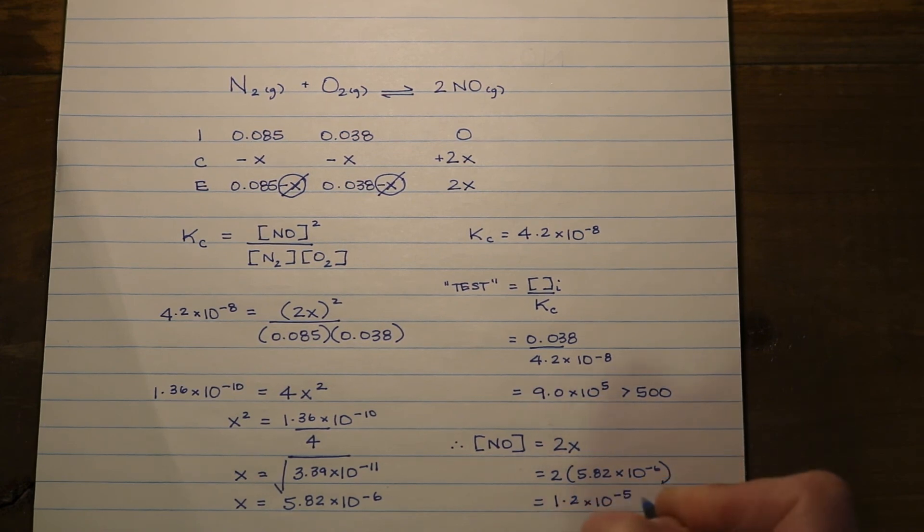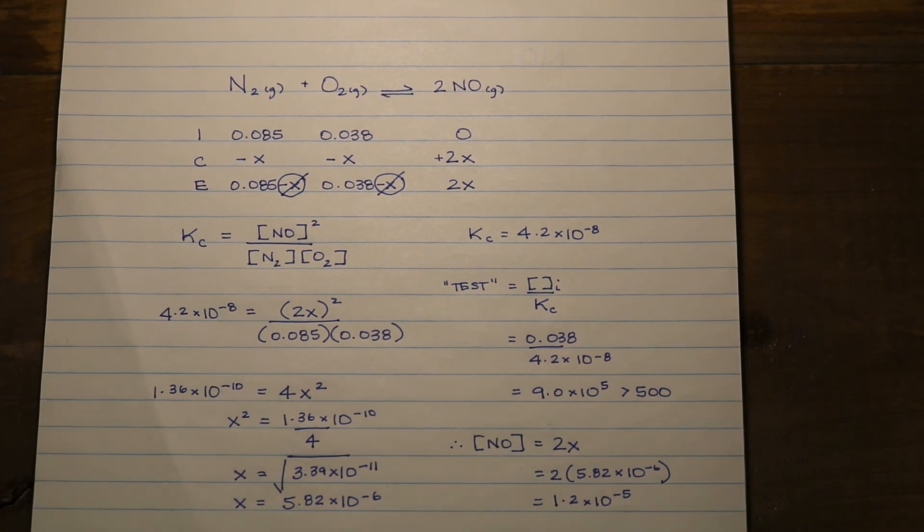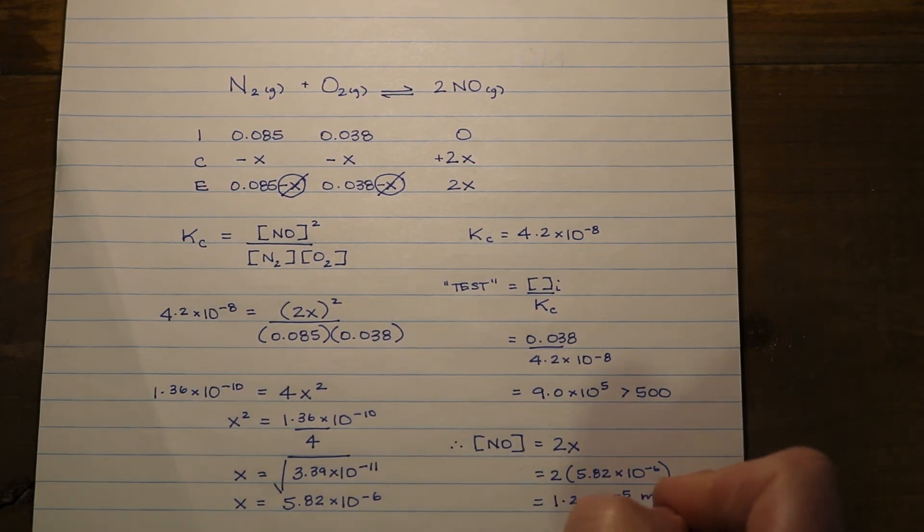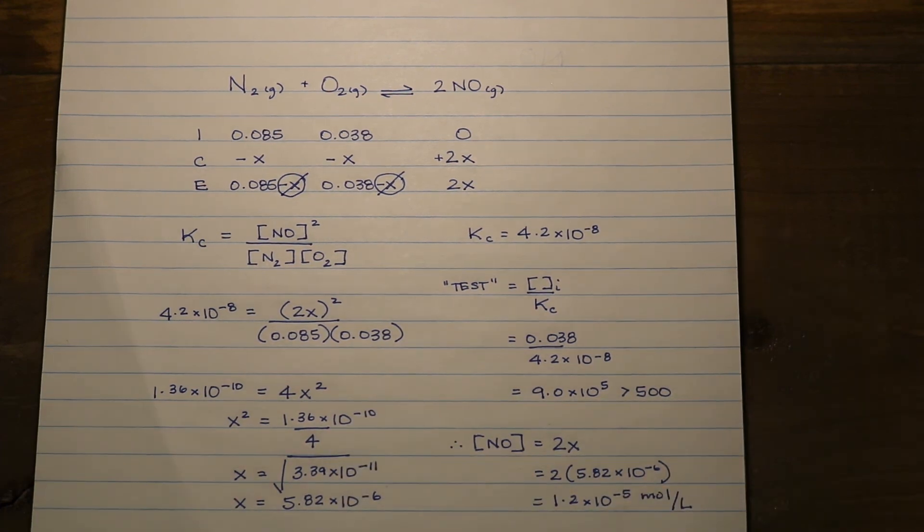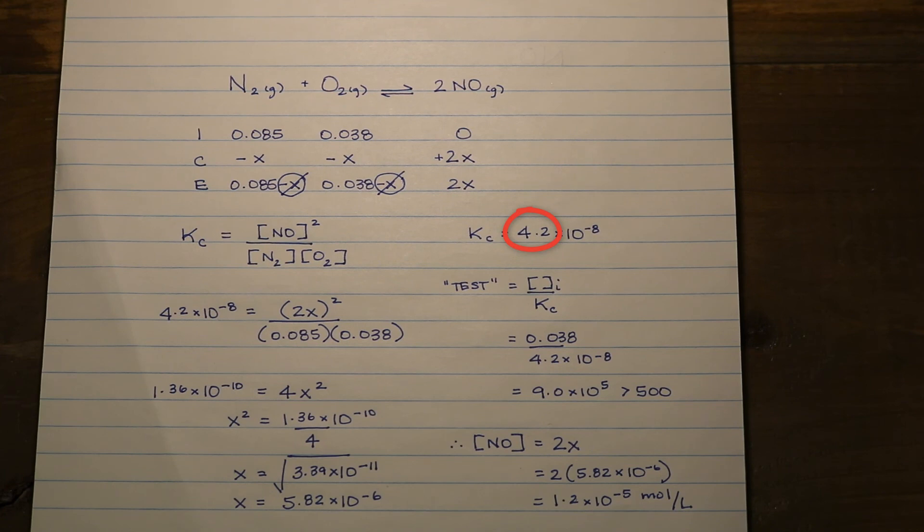Keep in mind it is a concentration, so we do have to include our units. In terms of significant figures, my K value was 2 significant figures, my initial concentrations were both 2 significant figures, and I was primarily just performing multiplication and division. So I can represent my final answer in 2 significant figures.